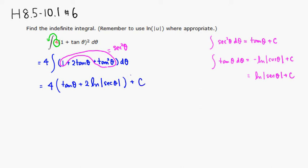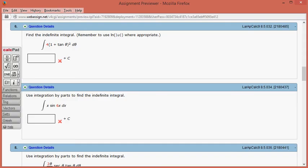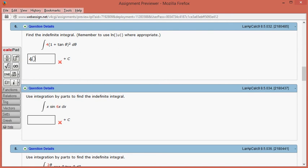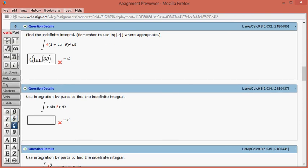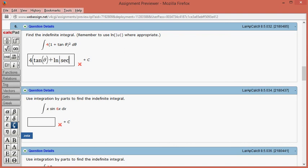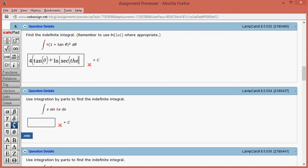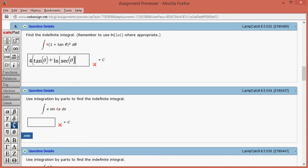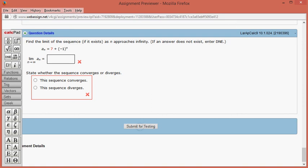Let's type it in. We have 4 times tangent of theta plus natural log of absolute value of secant of theta plus some constant c. Let's submit for testing.